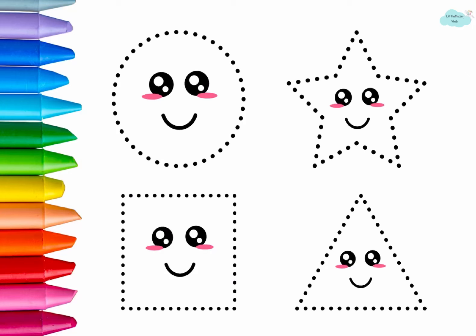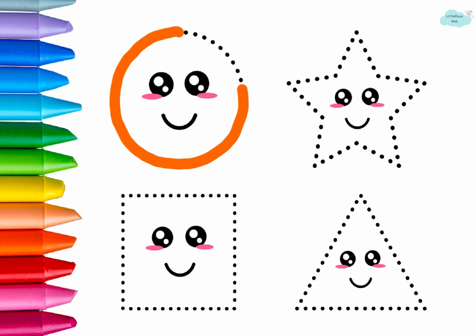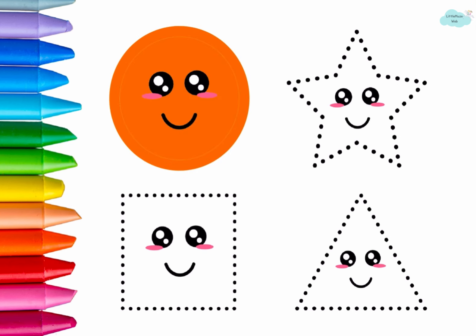Hello kids, let us learn about shapes. First shape is circle. Let's make an orange circle. Now let's put in some orange color.